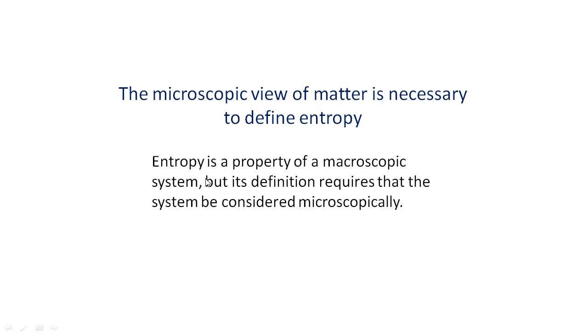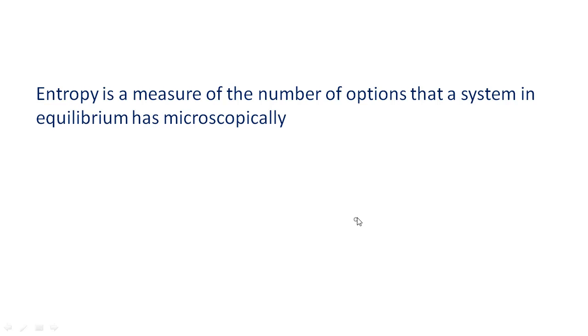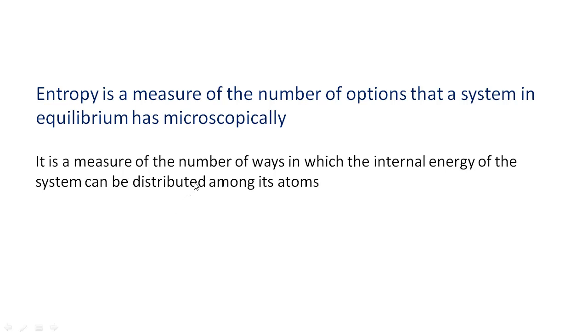So, entropy is certainly a property of a macroscopic system, but its definition requires that the system be considered from a microscopic view. The key idea is that entropy is a measure of the number of options that a system in equilibrium has microscopically. That is, it is a measure of the number of ways in which the internal energy of the system can be distributed among its atoms.